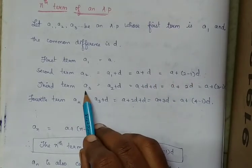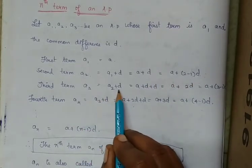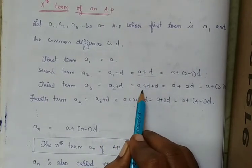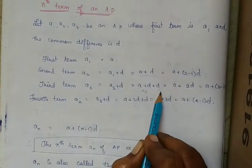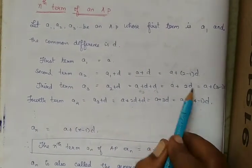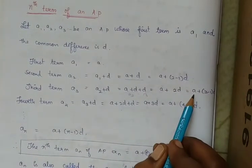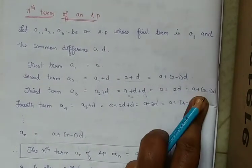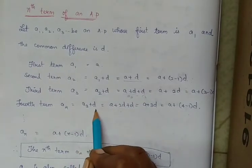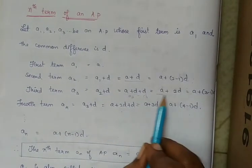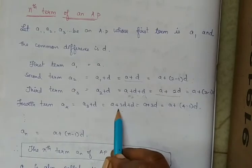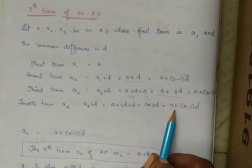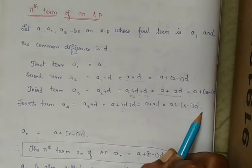The third term A3 is equal to A2 plus D. A2 is nothing but A plus D, so A plus D plus D equals A plus 2D. This can be written as A plus (3 minus 1) into D. Next, A4 is equal to A3 plus D. A3 is A plus 2D, so A plus 2D plus D equals A plus 3D, which can be written as A plus (4 minus 1) into D.